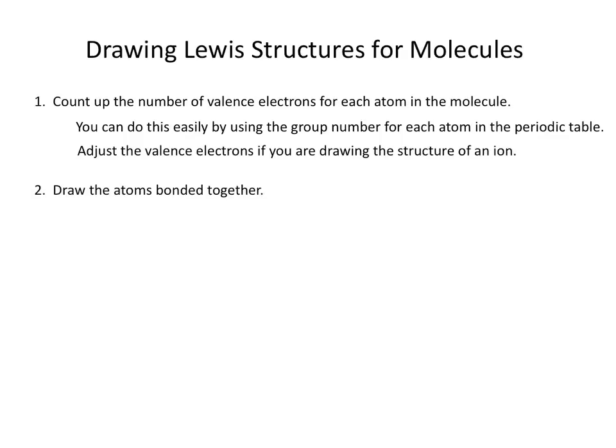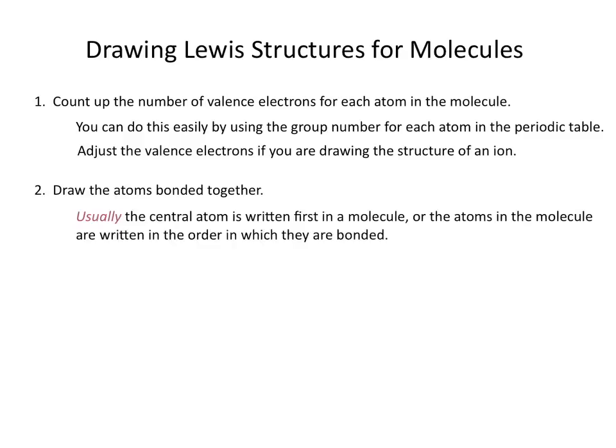The second thing you need to do is to draw the atoms in the molecule bonded together, and you'll always want to start with single bonds. Typically the central atom is written first, or the atoms are written in the order in which they are bonded. Remember that each bond drawn as a line contains two electrons, so each solid line counts for two electrons when counting your total valence electrons.